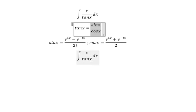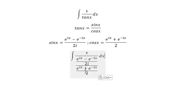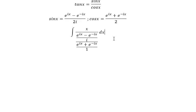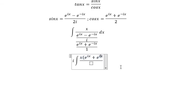For tan s, we substitute using the formula. For cos s, we substitute using the formula as well. After we simplify this function, you will get i multiplied with s, with e to the power of is plus e to the power of negative is, and e to the power of is minus e to the power of negative is.